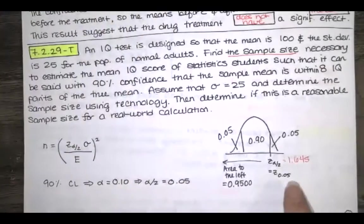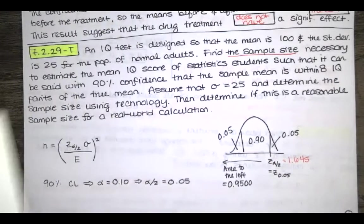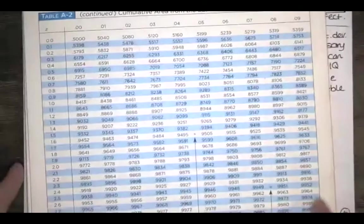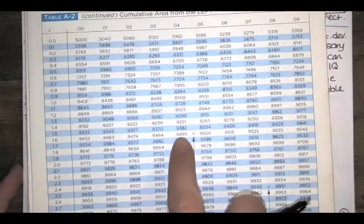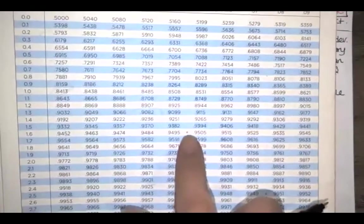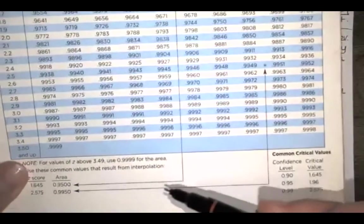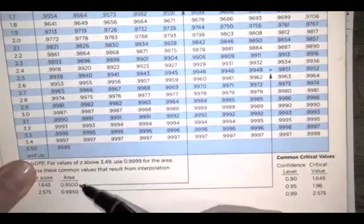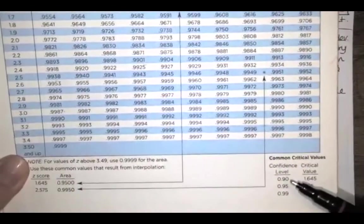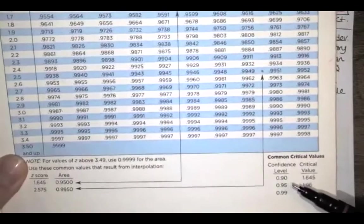If this wasn't a common confidence level, I would go to the body of my table and be looking for an area to the left of 0.9500. It looks like 0.9500 is in between those values and we see the little asterisk. Then we go to the footnote and see that the area to the left is 0.95, the Z score is that, which is the same as the critical value associated with a 90% confidence interval.